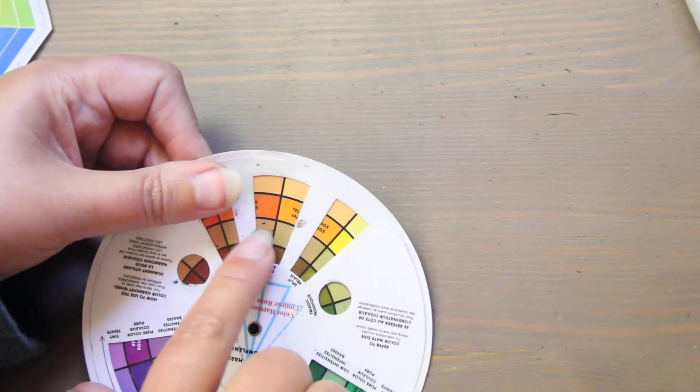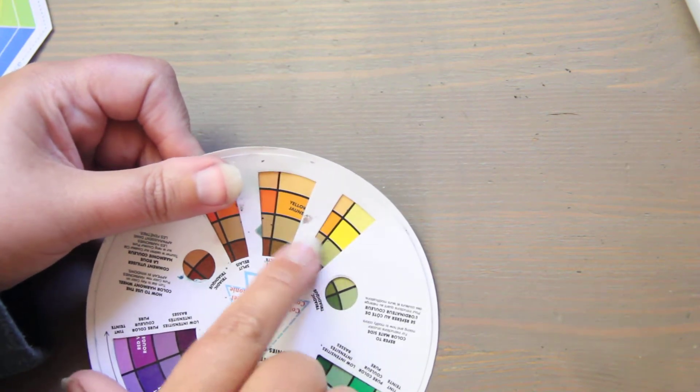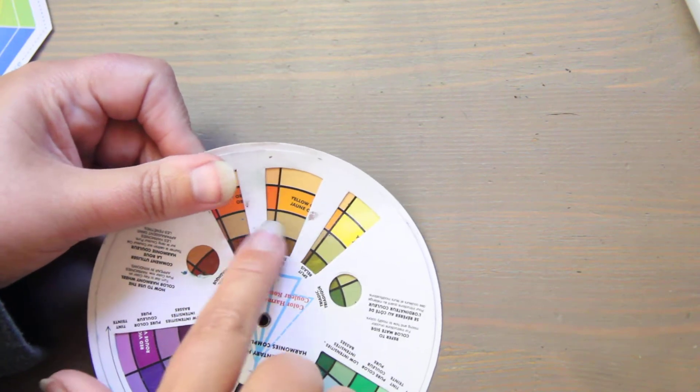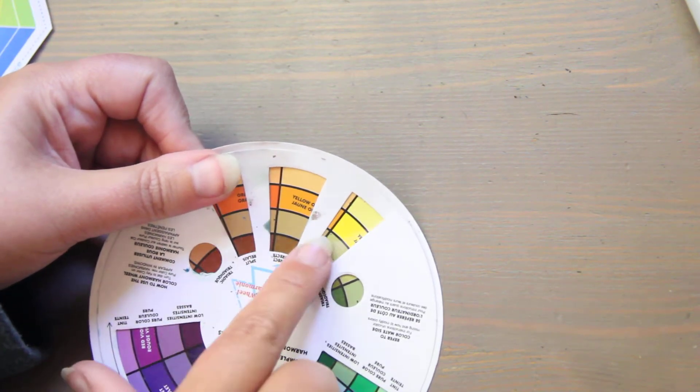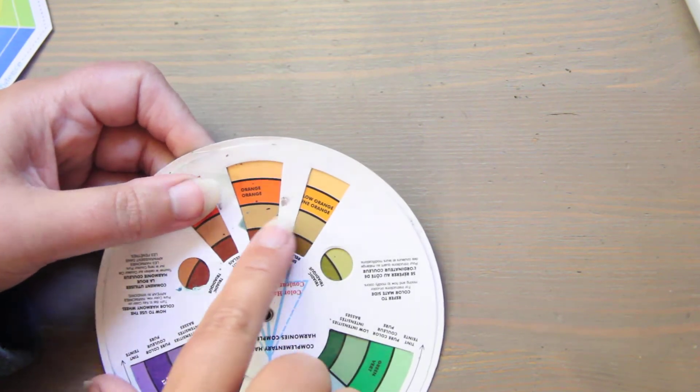How do I know these are of similar value? If I took a picture of this whole row and desaturated it, if I turned it black and white, they would all be the same color gray. One would not be darker or lighter than the other. These are all the same value.